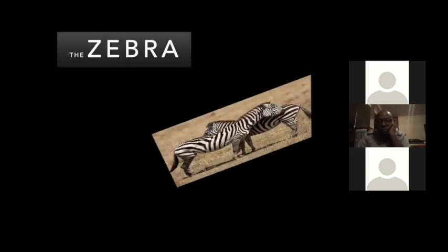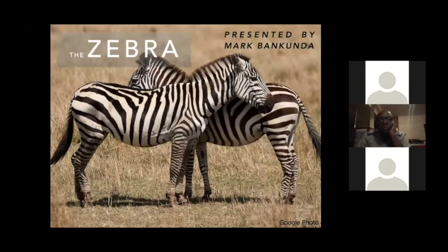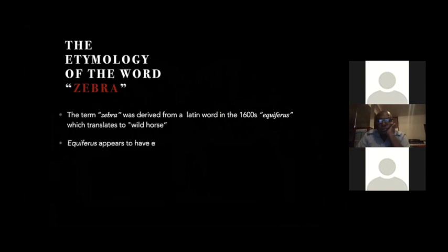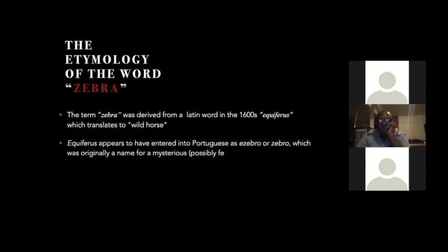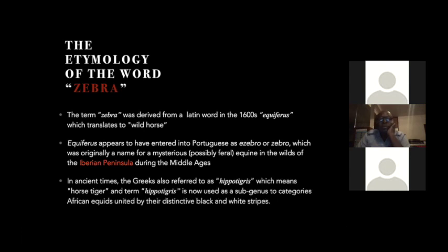Today's topic is the zebra, and before us we have a wonderful picture of a pair of zebras. I would like to begin with the etymology of the word 'zebra' — that is, the origin of the word. The term 'zebra' is derived from a Latin word in the 1600s: 'equiferus', which refers to a wild horse.